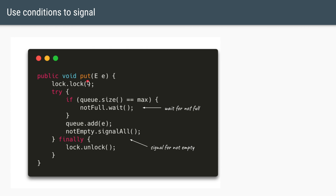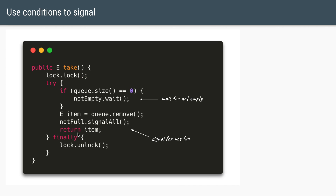In code, whenever the producer adds anything to the queue it calls notEmpty.signalAll(), notifying all consumer threads waiting on that condition. On the other side, after the consumer takes an item from the queue it calls notFull.signalAll(), notifying all producer threads that were blocked because the queue was full. As soon as the signal fires, the waiting thread comes out of the wait state and tries to reacquire the lock.